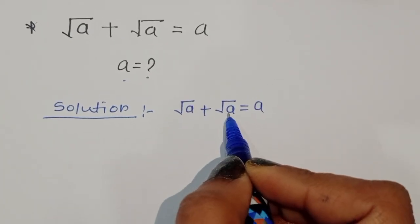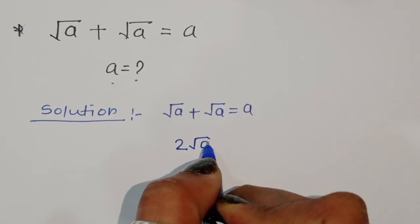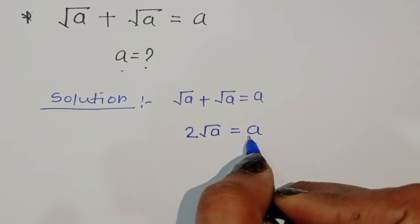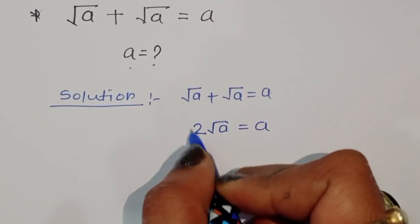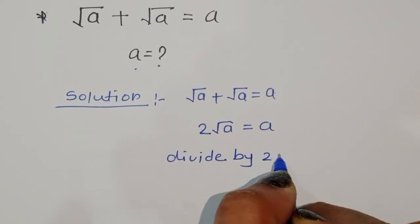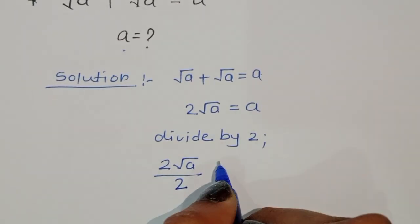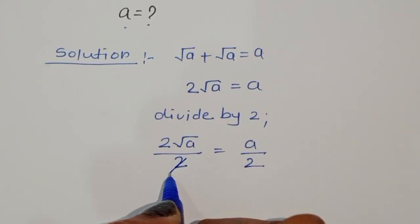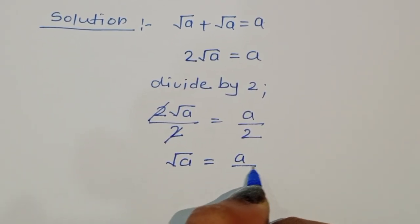Here, square root of a plus square root of a — when we combine these terms we get 2 square root of a, which is equal to a. Now we have to find the value of a, so we divide both sides by 2. 2 square root of a divided by 2 is equal to a by 2. The 2 cancels, so we get square root of a is equal to a by 2.